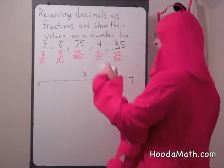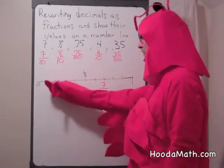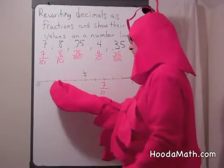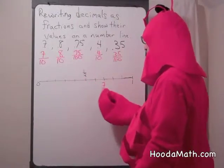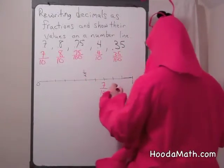What about 8 tenths? Well, 1, 2, 3, 4 tenths, 5 tenths, 6 tenths, 7 tenths, 8 tenths is right here.